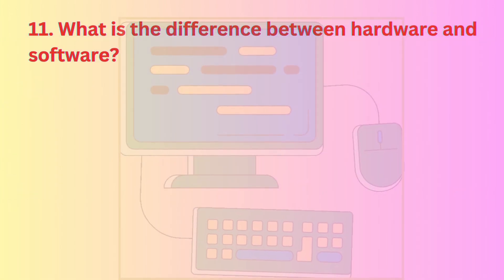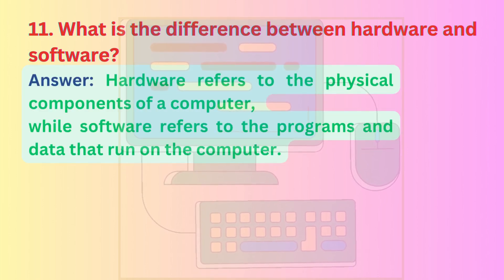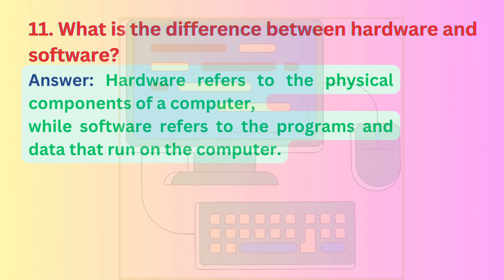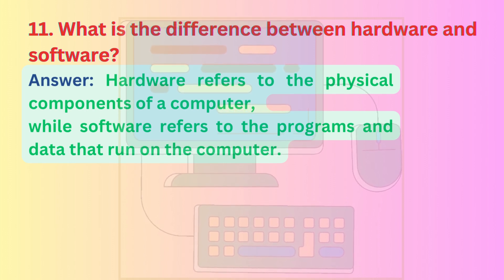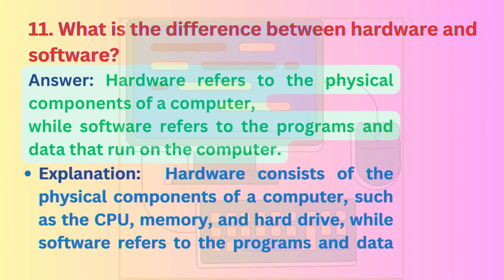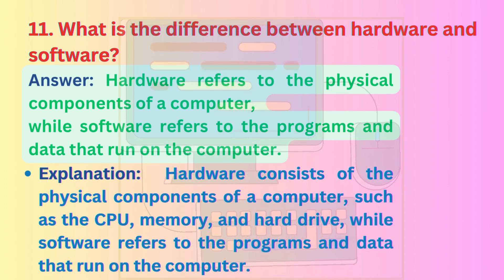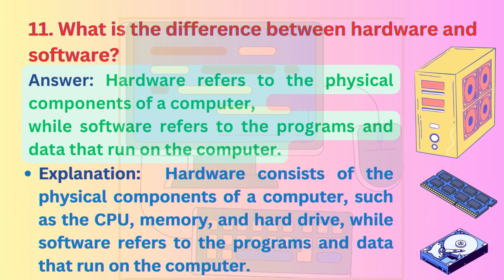Question 11: What is the difference between hardware and software? Answer: Hardware refers to the physical components of a computer, while software refers to the programs and data that run on the computer. Explanation: Hardware consists of the physical components of a computer, such as the CPU, memory, and hard drive, while software refers to the programs and data that run on the computer.